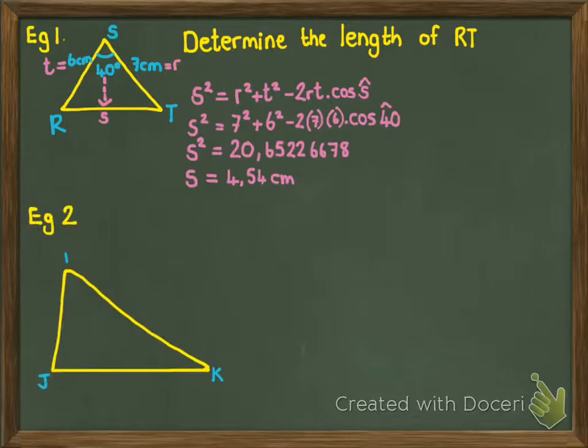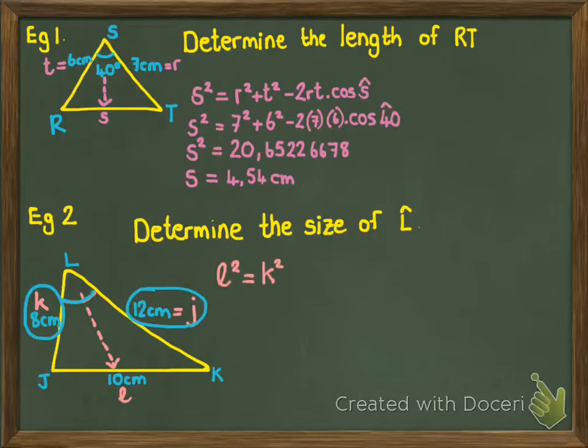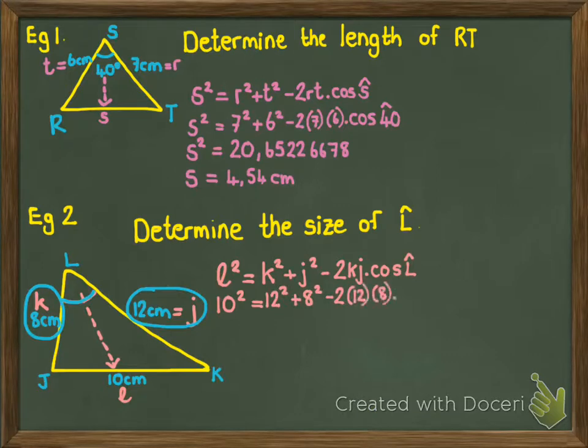So example number two would be an example where I give you the length of all three sides, which means the cos rule can help you find an angle. So this question says determine the size of angle L, which means I just need to set up the cos rule in the way to help me find angle L. So opposite angle L is baby L, baby J and baby K are opposite their angles. Now because L is between J and K, everything on the right hand side of the cos rule will involve J and K. So L squared equals K squared plus J squared minus 2KJ cos angle in between, which is angle L.